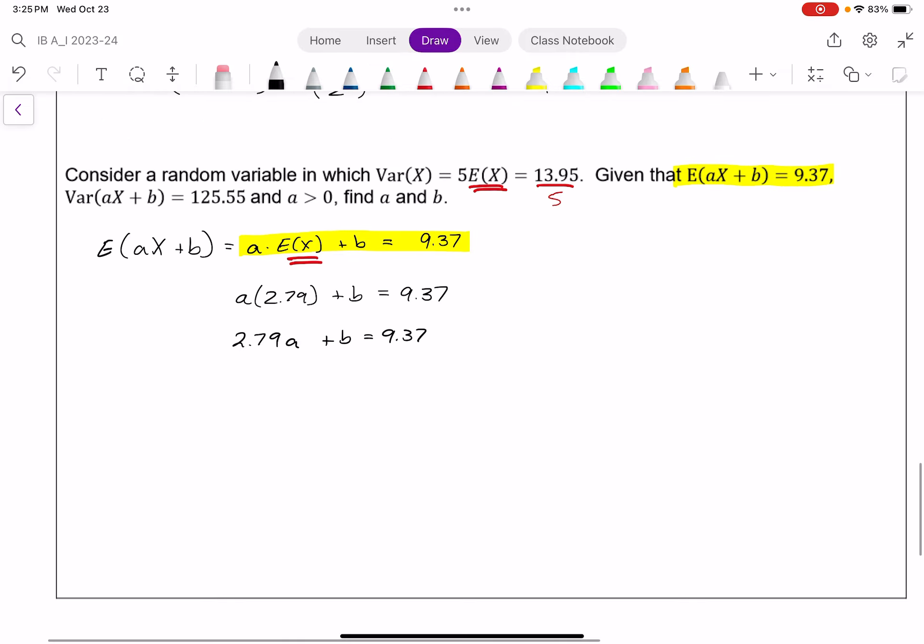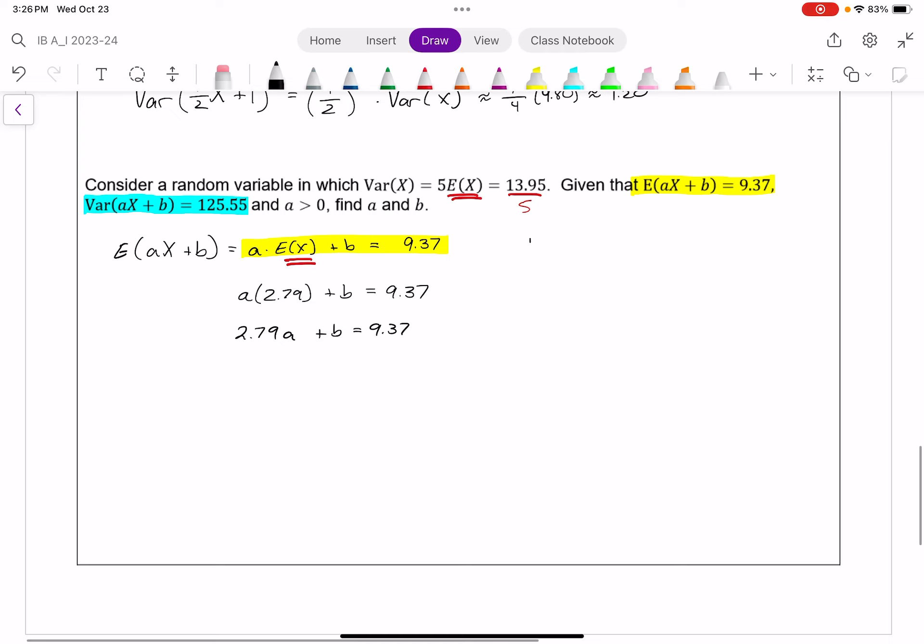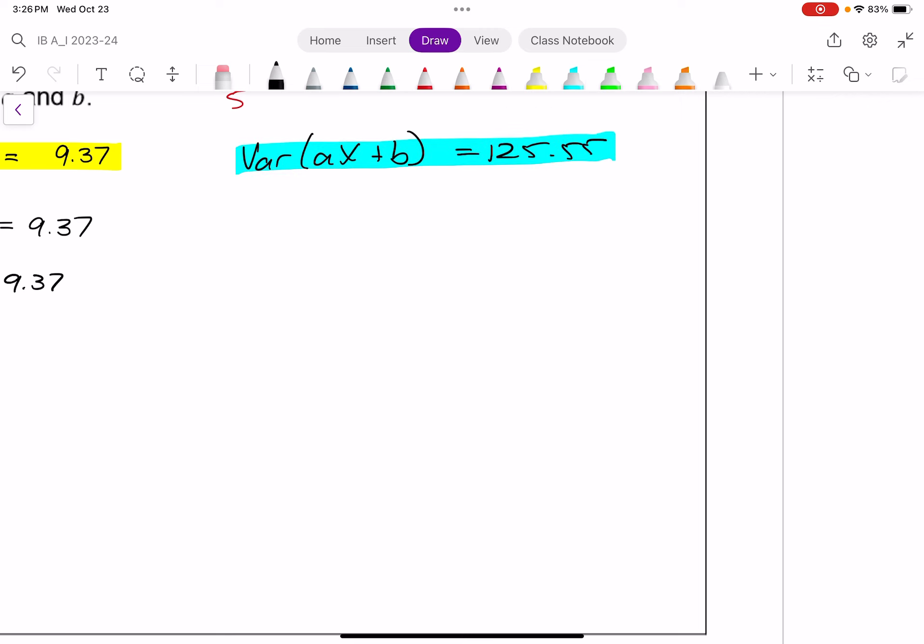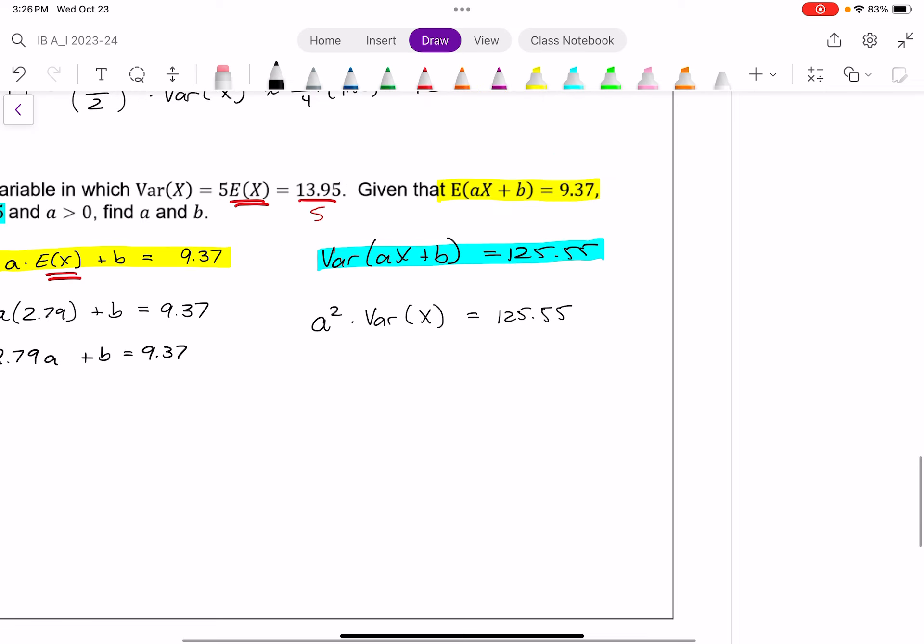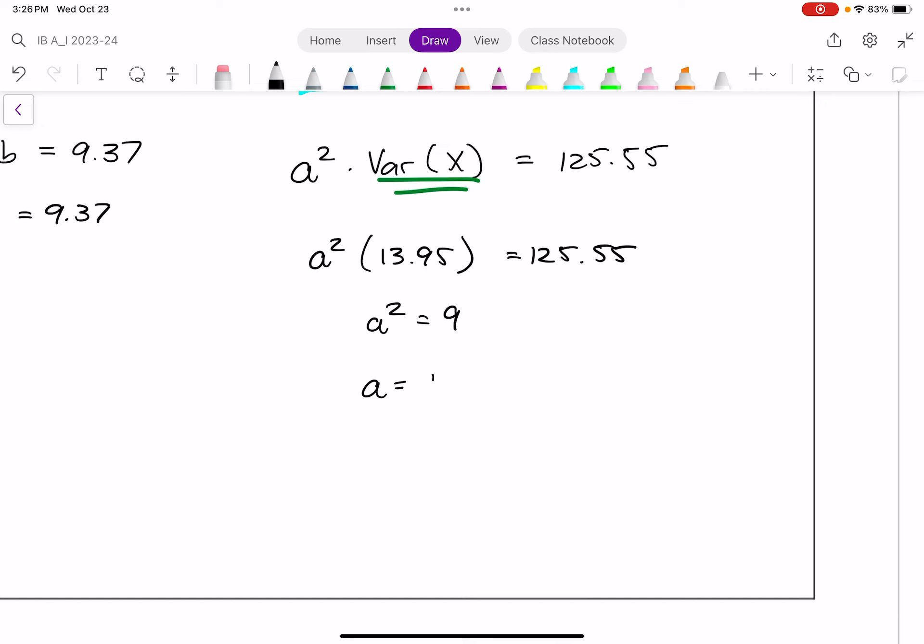But I have another part I can look at. I know the variance of AX plus B is 125.55. Keep in mind, the variance of AX plus B equals 125.55. But that plus B makes no difference to the variance. But the A does, so I can rewrite this as A squared times the variance of X equals 125.55. We know the variance of X is 13.95. So I have A squared times 13.95 equals 125.55. We should get A squared equaling exactly 9, so A does equal plus or minus 3.